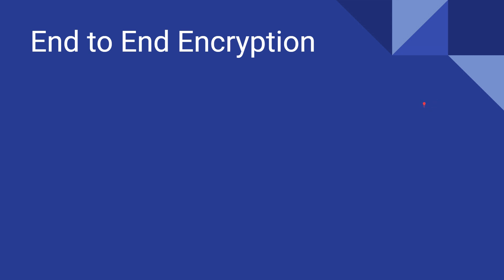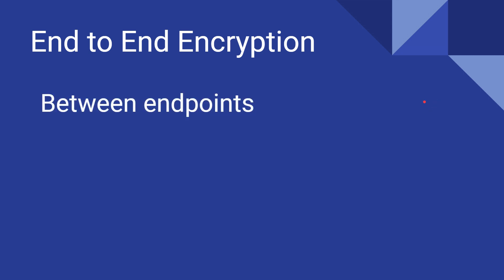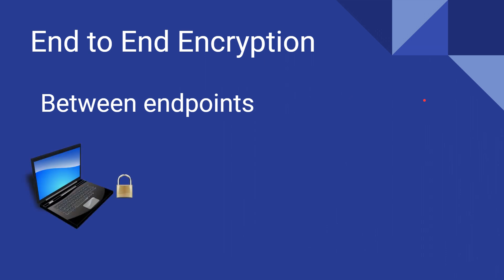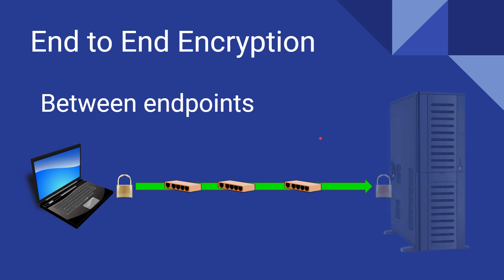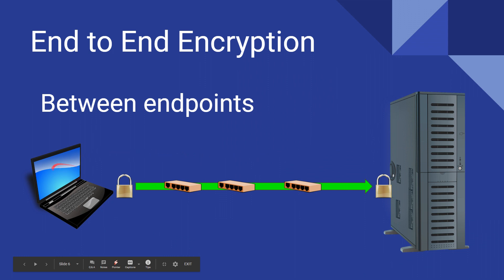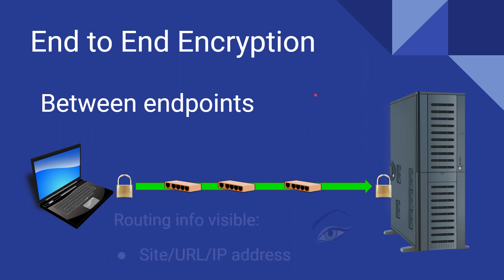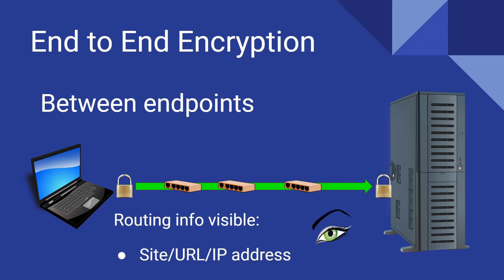With end-to-end encryption it's a little bit different. You're encrypting between the two endpoints — for example, your computer accessing YouTube to watch this video. As the data goes across the wire you might have several stops, but your encryption is happening at the endpoints. You have the YouTube server on one end and your computer on the other; you've encrypted it on your device and at the application layer. The key difference from link encryption is that routing information with end-to-end is visible, so anyone who eavesdrops on your wires can actually see the website or IP address you're accessing.